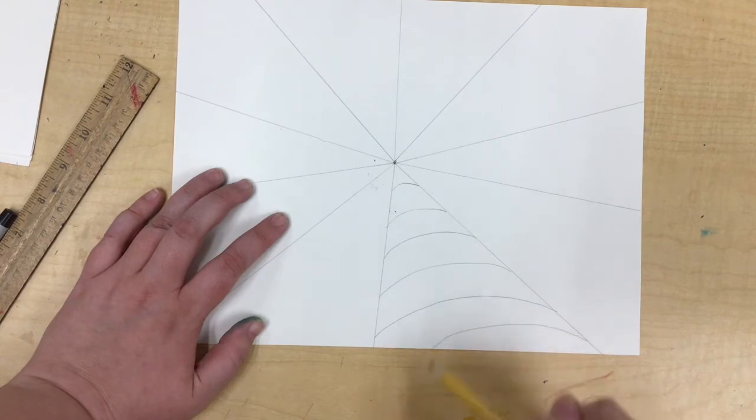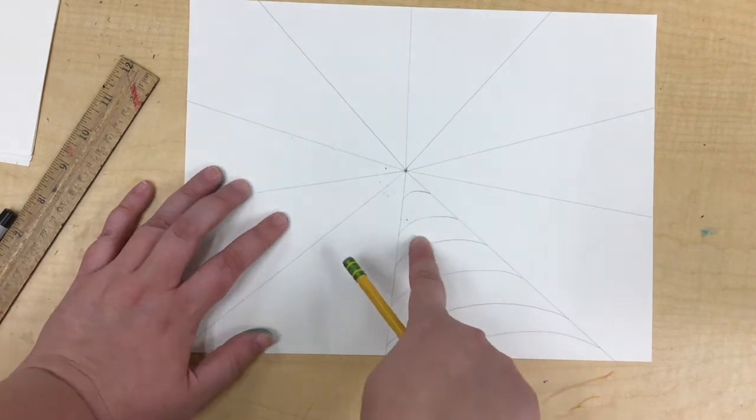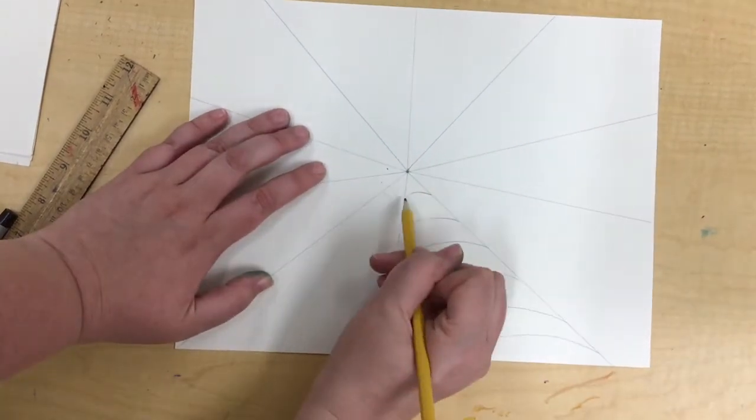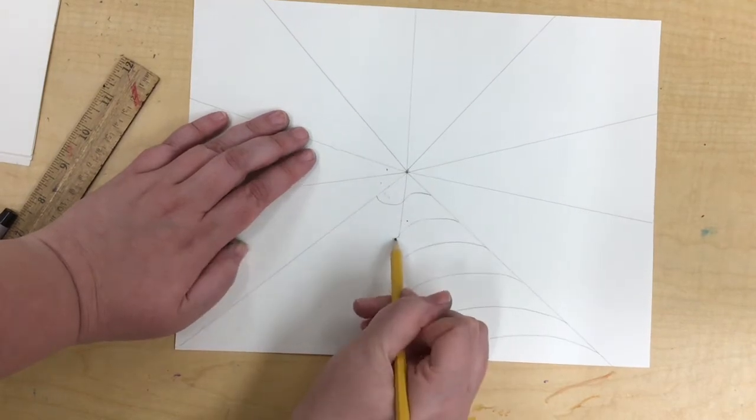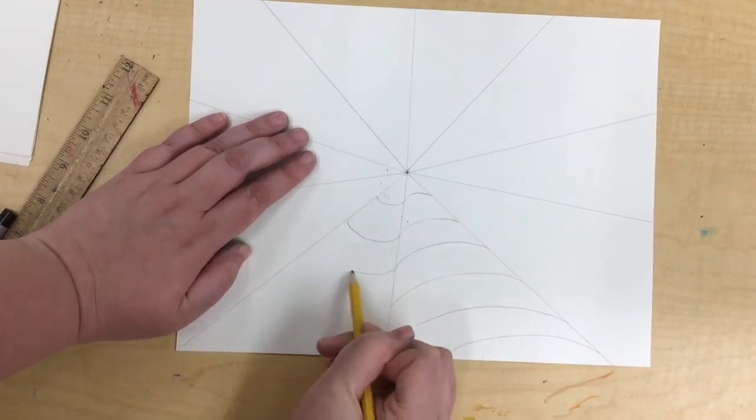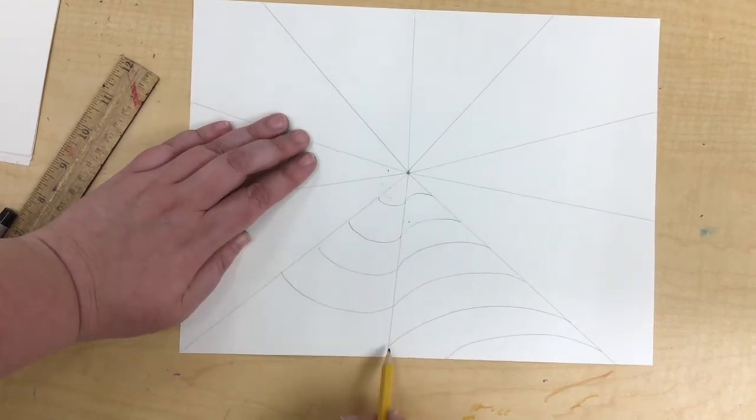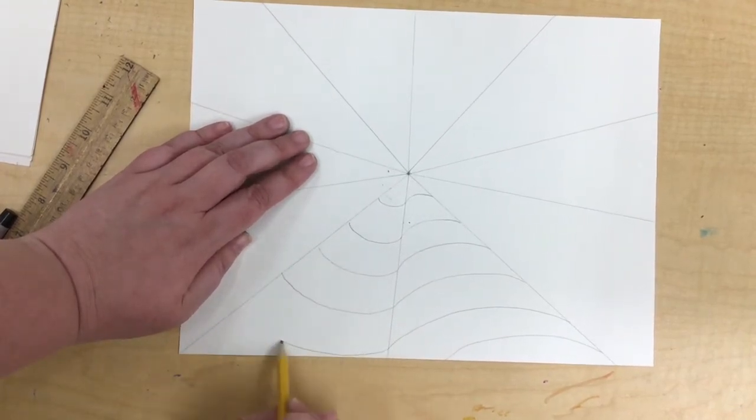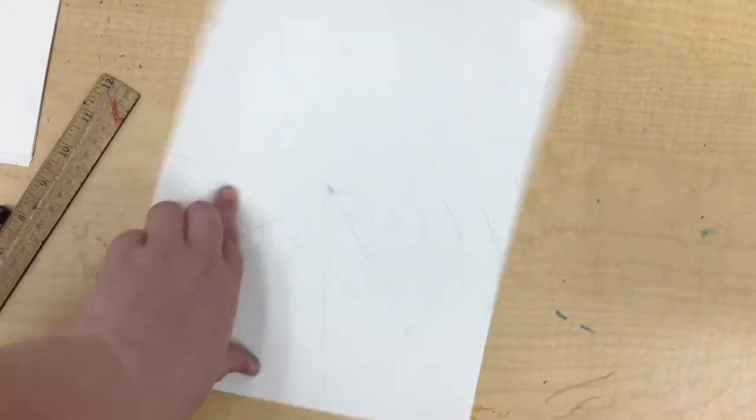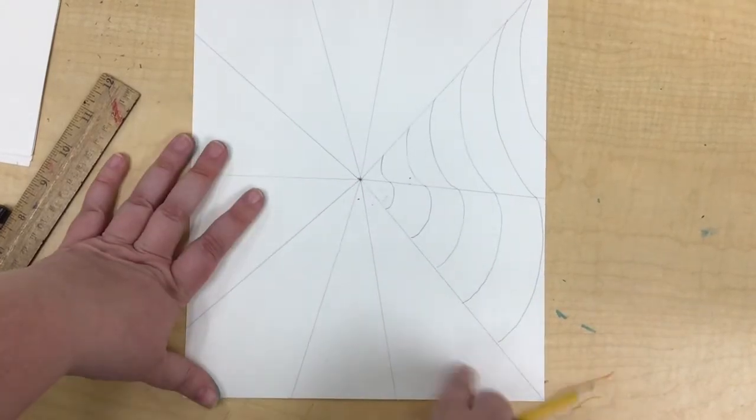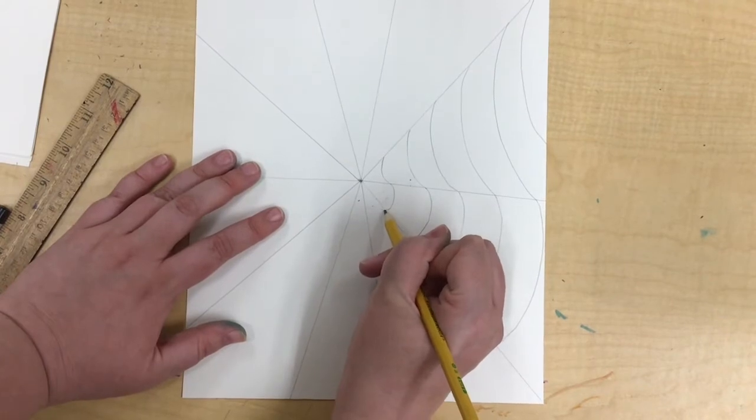Okay, now on the ones next to it, I'm going to curve the other way. I'm going to attach here and I'm going to curve under. So that goes the opposite way, and then I'm going to go to my next one and it's going to curve up. So it's going to switch back and forth.